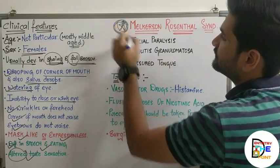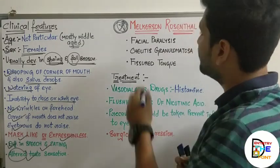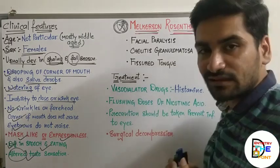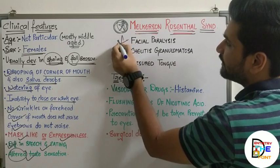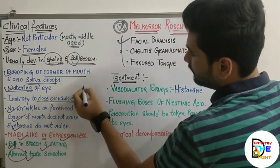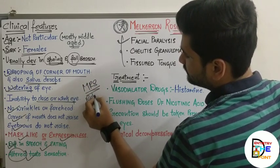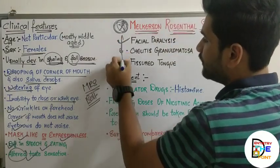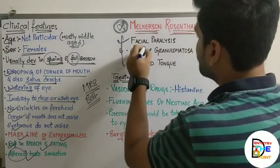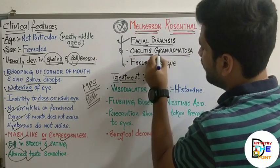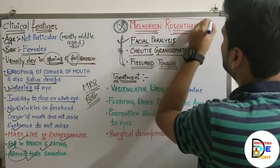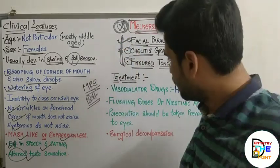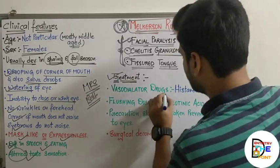An important question commonly asked in PG exams is about Melkerson-Rosenthal syndrome, which is always associated with Bell's palsy. This syndrome includes three components: facial paralysis, cellitis granulomatosa, and fissured tongue. These three together comprise Melkerson-Rosenthal syndrome.